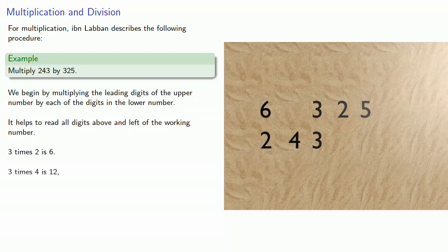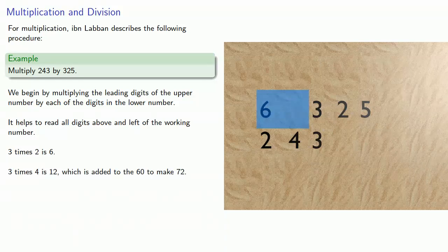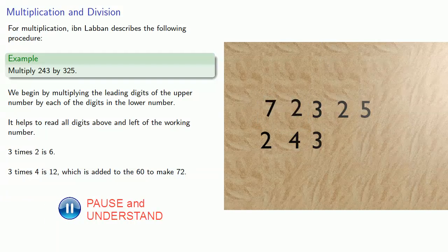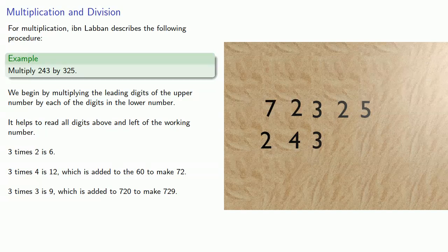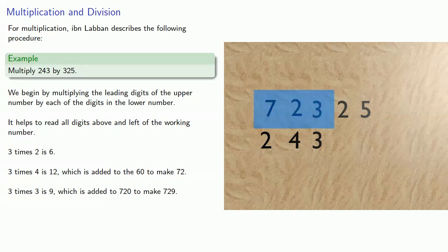3 times 4 is 12, which is added to the 60 to make 72. 3 times 3 is 9, which is added to the 720 to make 729.